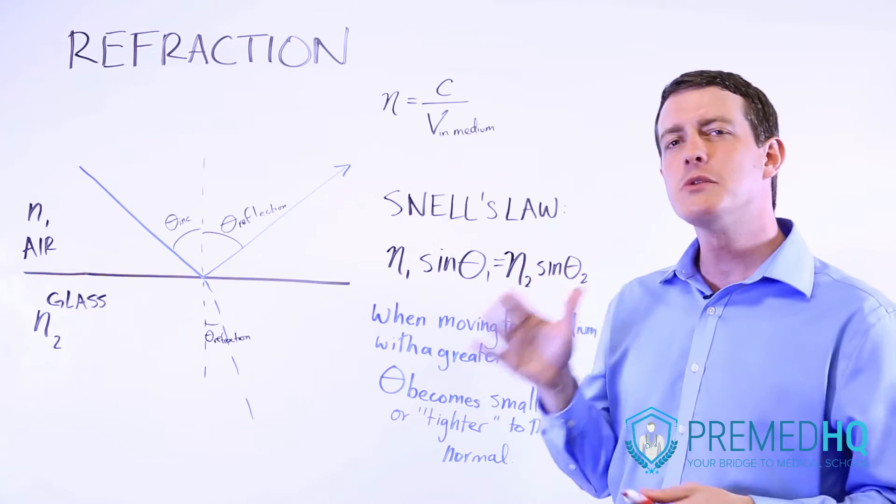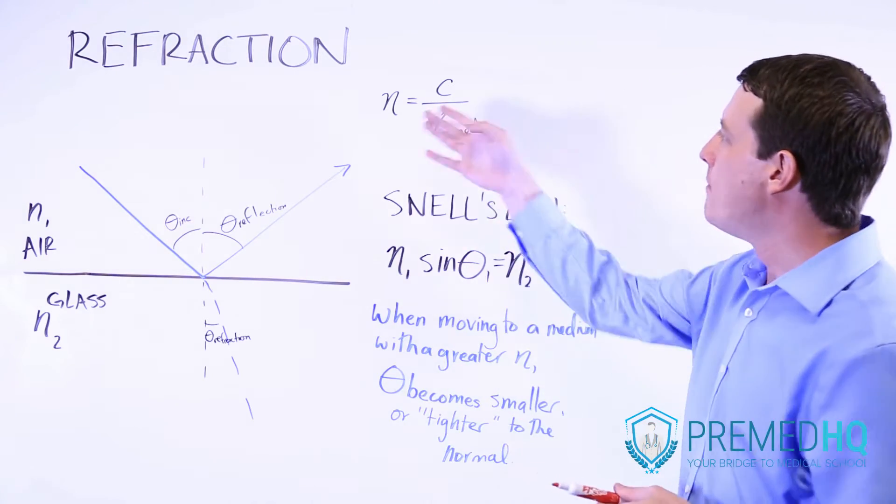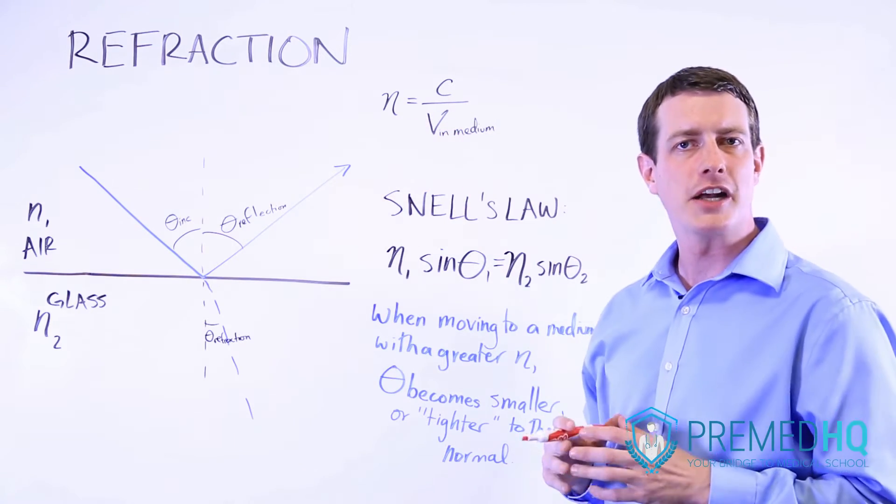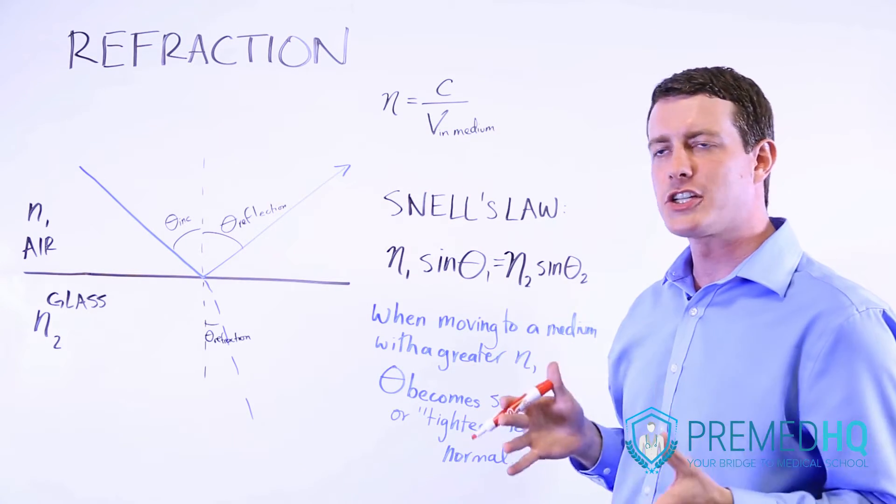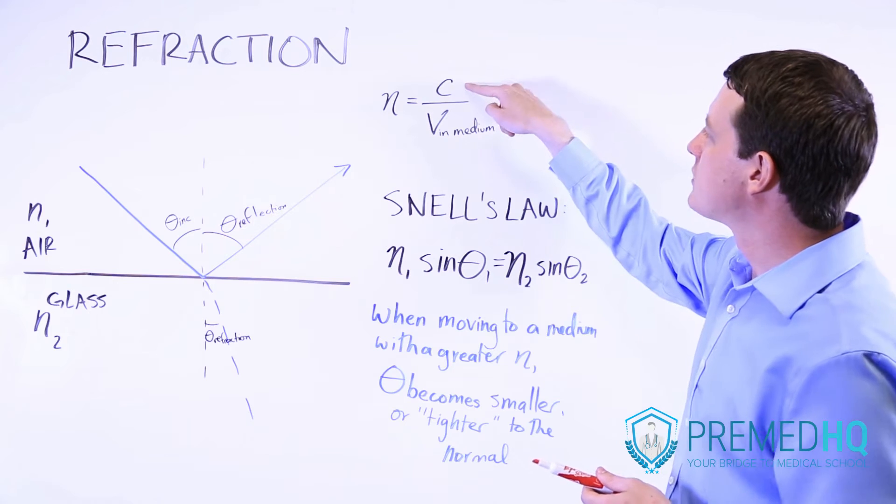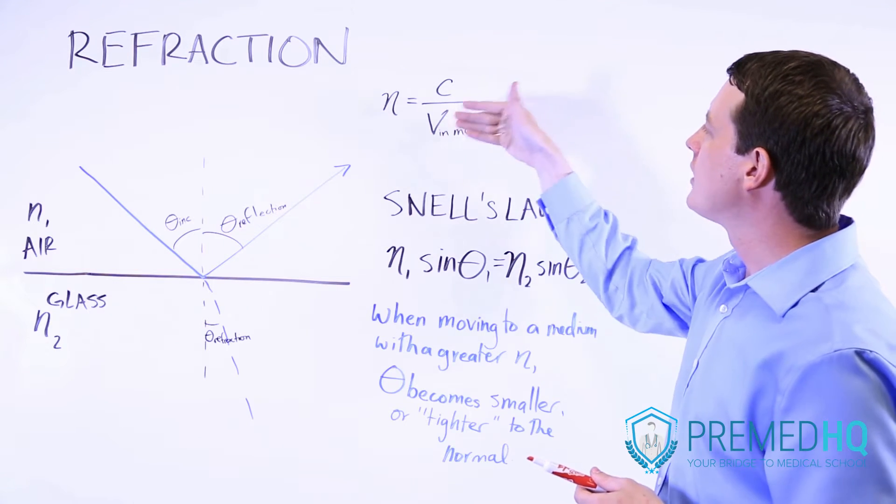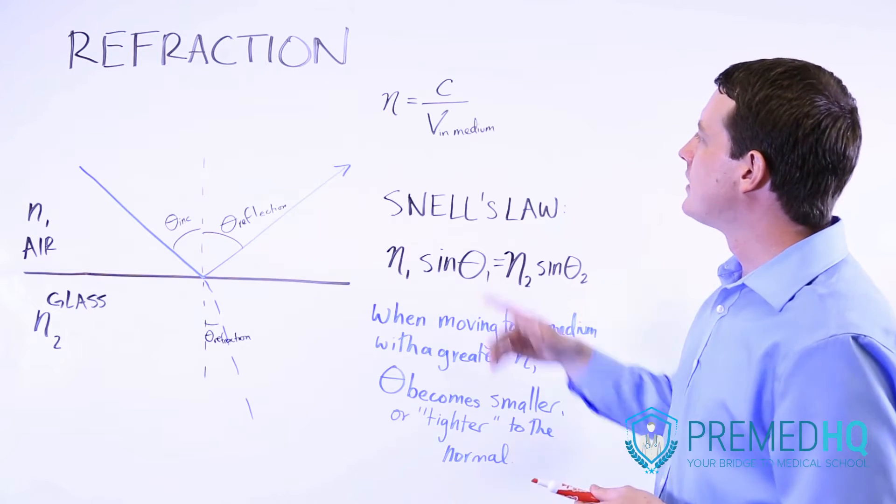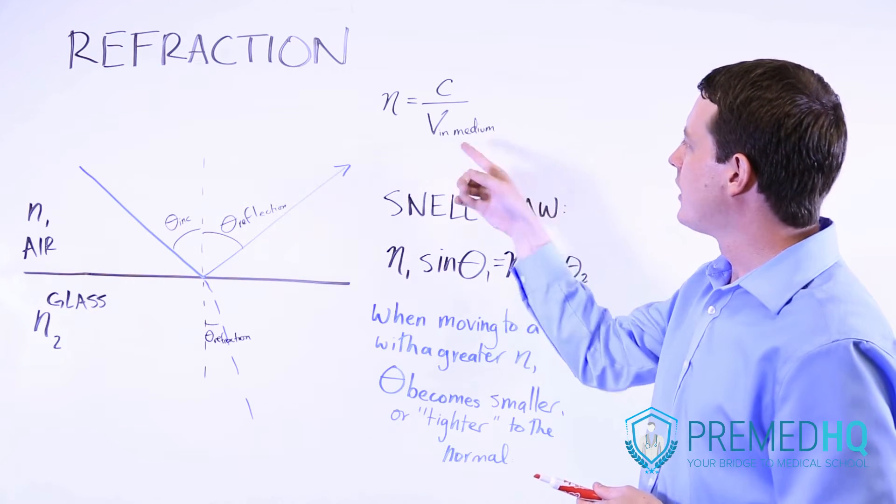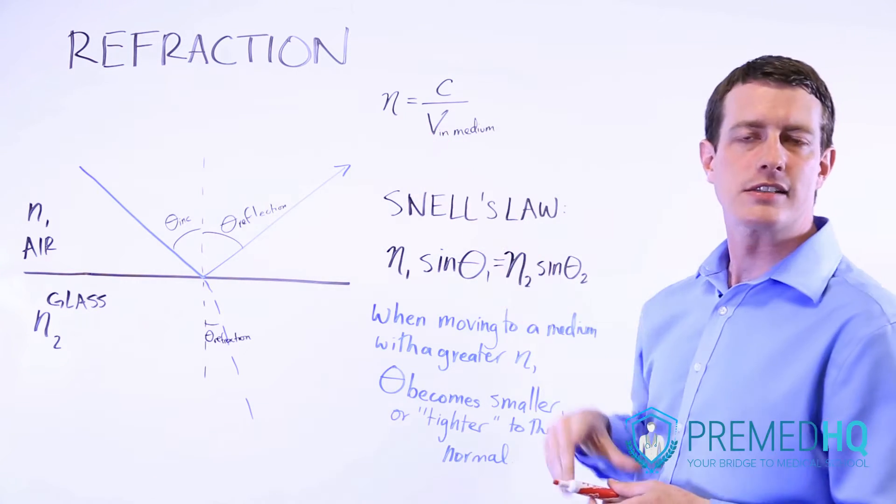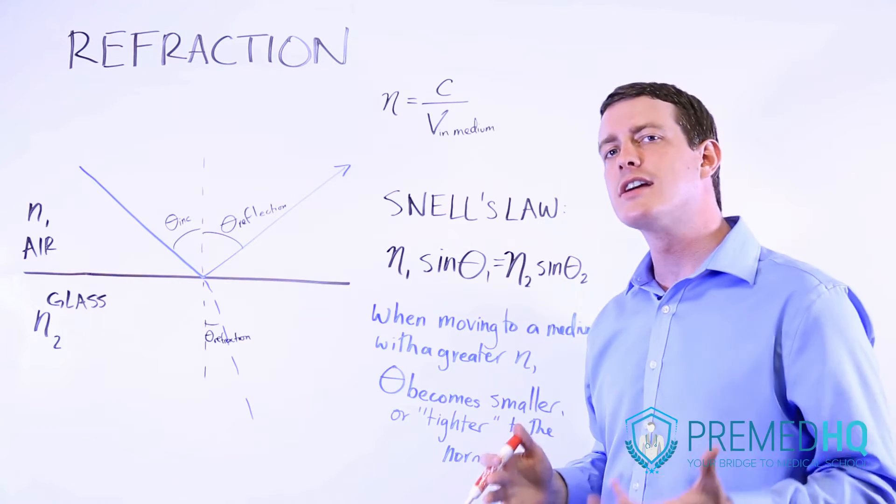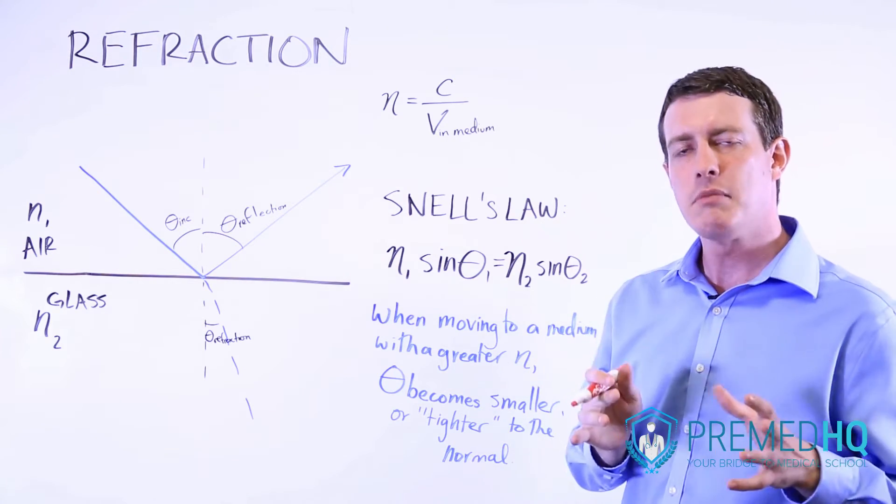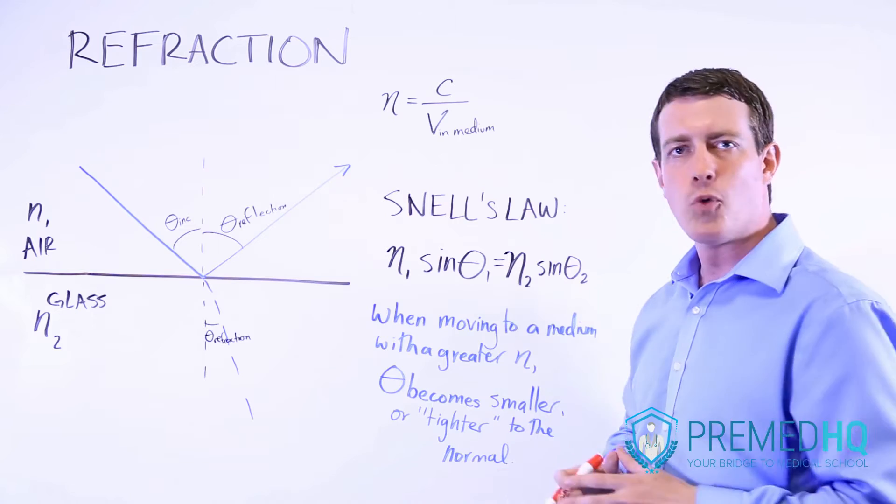And the degree to which that happens is described by n, which is the index of refraction. The index of refraction can be described as the speed of light over the velocity of the light in that particular medium. And notice that as the velocity in the medium slows down, the index gets greater. And so a greater index of refraction means that that medium slows down light more than others.